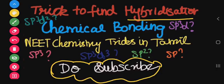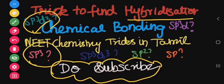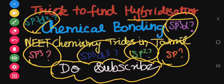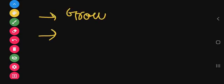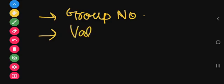We will talk about bond order and hybridization. We will talk about chemical bonding — sp3, sp2, sp3d, and others. We will talk about clarity in this video, including the hybridization sheet, group number, valence, P-Block, D-Block, and the number of the NN group.